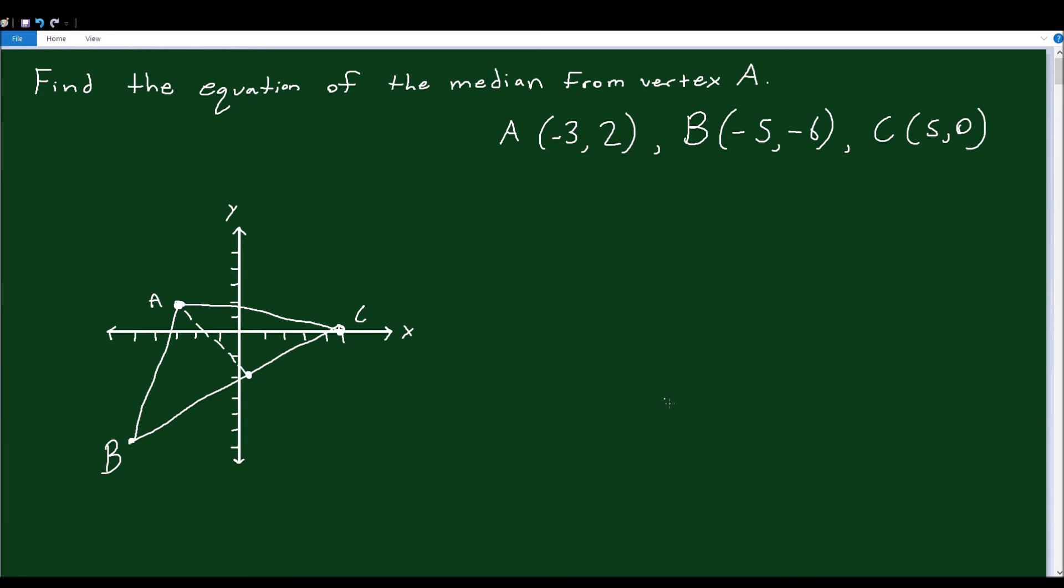So the first thing we have to do is find this midpoint. We already have one point on our line, that's A. But in order to find the slope, we need a second point. So that second point is the midpoint of BC. So we have to find the midpoint of BC.